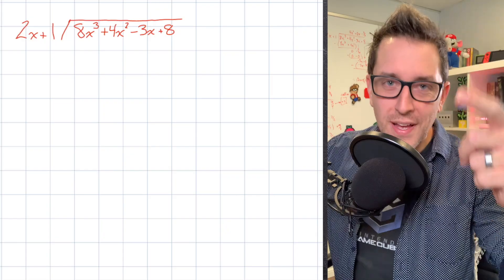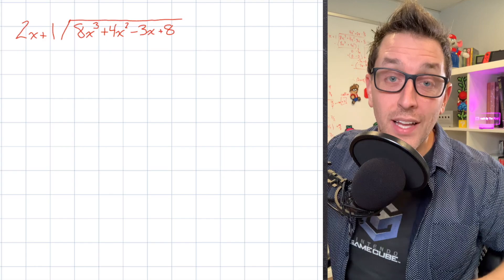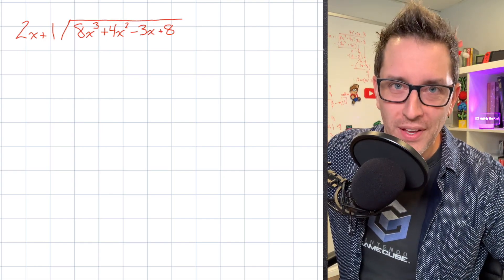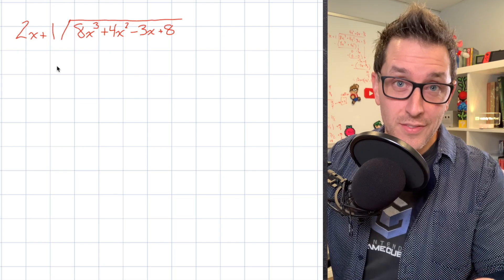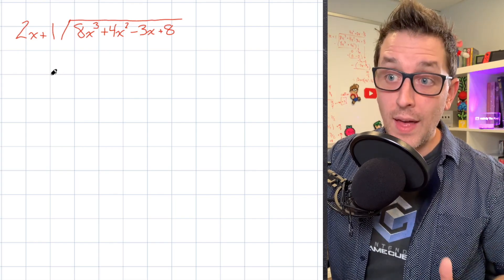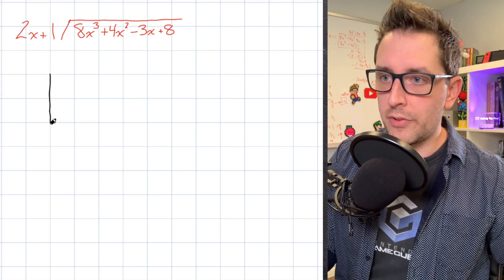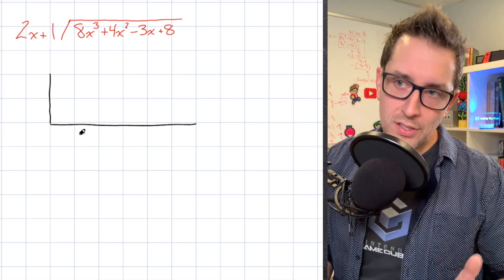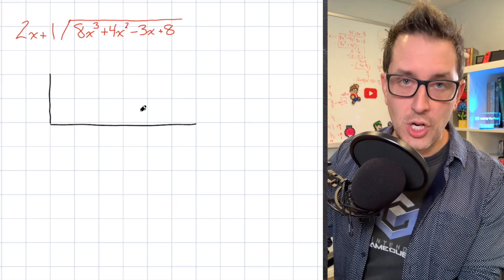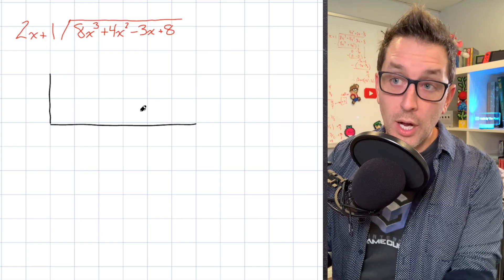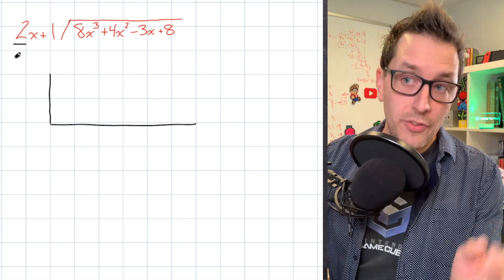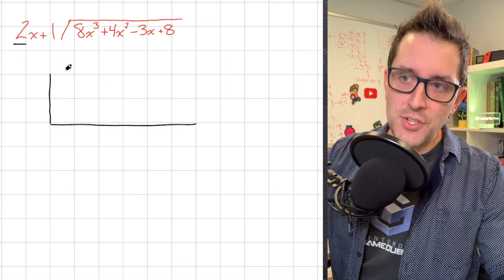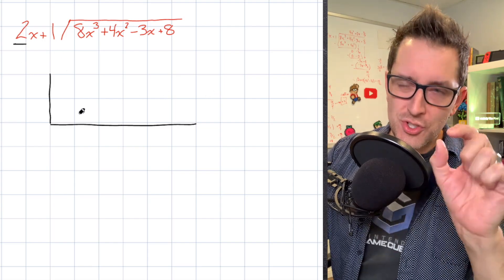We're going to start this synthetic division problem just like any other one, and that is going to be by drawing one of these L bracket chart thingies. You'll remember that our goal with synthetic division is to fill in this chart with a couple pieces of key information. The fact that the coefficient on our divisor is not equal to 1 here is going to change the way we approach our table just slightly.